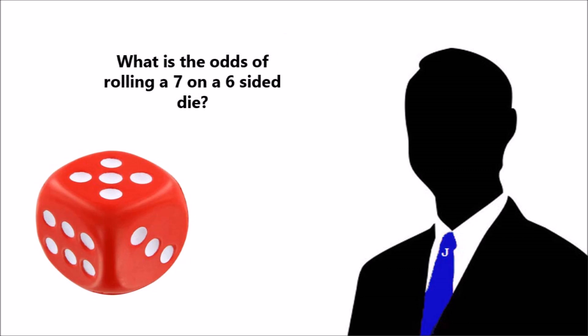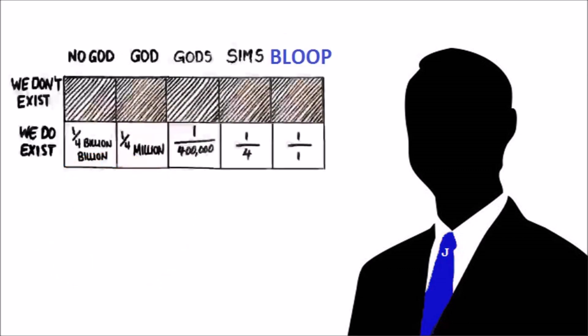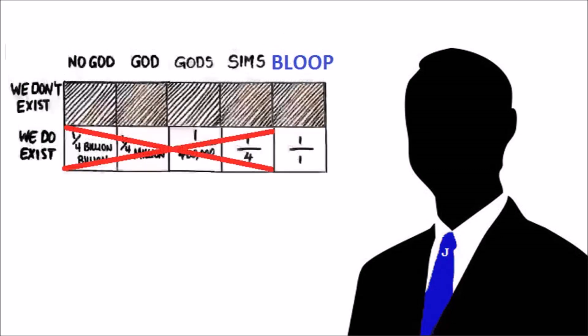Look, this is how easy it is. You forgot to include Bloop. Bloop is a 100% chance of making humans because that is its purpose. Now when we incorporate that, Bloop is now the most likely cause of human life. It blows all your other options out of the water. It therefore mathematically proves that Bloop exists.